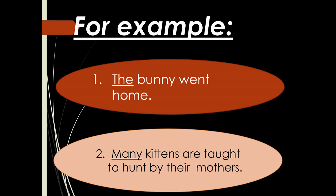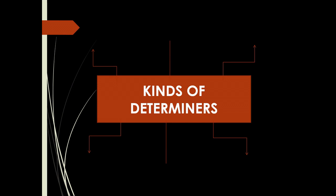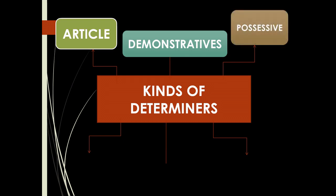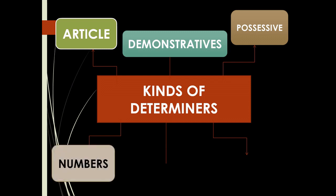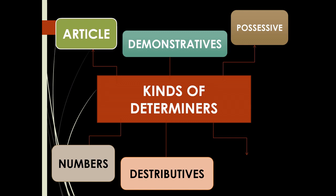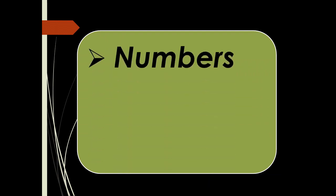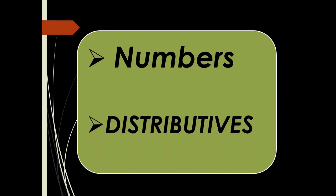There are six kinds of determiners: number one, articles; number two, demonstratives; number three, possessives; number four, numbers; number five, distributives; number six, quantifiers. In this lecture, you will learn the meaning and uses of the next two kinds: numbers and distributives.